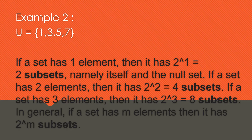If a set has two elements, then it has two raised to two, equal to four subsets — two times two. If a set has three elements, then it has two raised to three, equal to eight subsets — two times two times two equals eight. In general, if a set has m elements, then it has two raised to m subsets. You can use that formula to get the number of subsets of a given set.